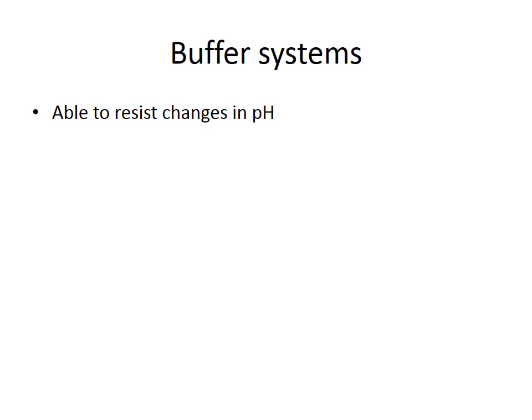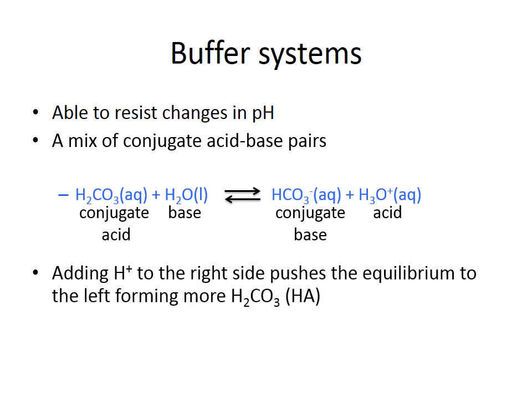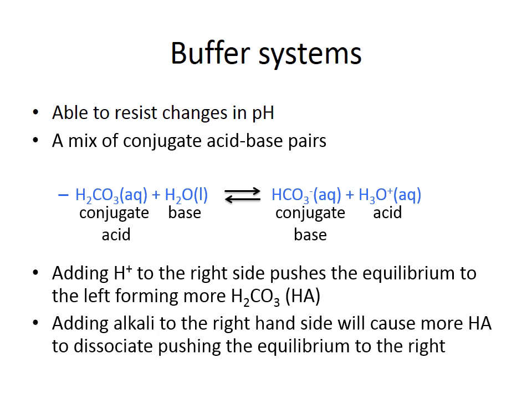Buffer systems are able to resist small changes in pH and consist of a conjugate acid-base pair. In this example, H₂CO₃ is the conjugate acid on the left — it gives up a hydrogen ion to become the conjugate base on the right. Because this equation is in equilibrium, adding hydrogen ions pushes the equilibrium left, forming more H₂CO₃. Adding an alkali causes more H₂CO₃ to dissociate, pushing the equilibrium right. Although pH does not stay completely stable, the change is much smaller than without the buffer.